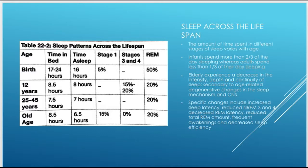Looking at the lifespan chart: at birth, time in bed is 17 to 24 hours, with approximately 16 hours of sleep. Adolescents need more sleep — time in bed is approximately eight and a half hours, needing about eight hours. In middle age, roughly 25 to 45, seven and a half hours is adequate, with most people sleeping approximately seven hours and 20% of that being REM. For the elderly, increased sleep latency, reduced non-REM 3 and 4 (the restorative sleep), decreased REM latency, reduced total REM amount, frequent awakenings, and decreased sleep efficiency are all present.